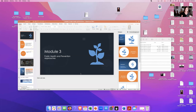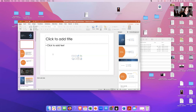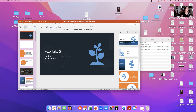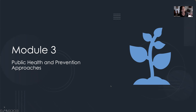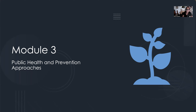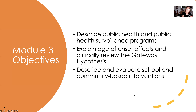Hello, class. I'm back again with Module 3. Without further ado, let me go ahead and share that screen. We're going to talk about Module 3 today, Public Health and Prevention Approaches. Module 3 is going to have two objectives in this first video and then one objective in the last video, so only three objectives. Objectives are your study guide — if you know that stuff, you will definitely do well on the video quiz.